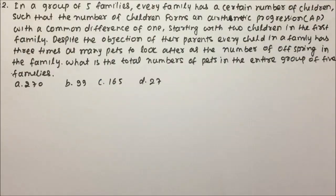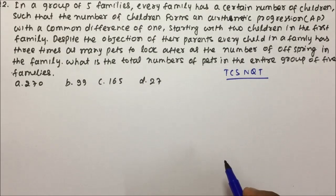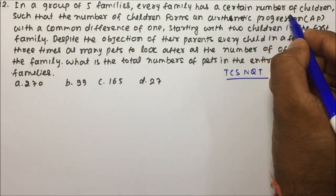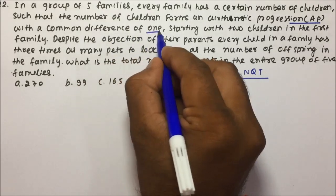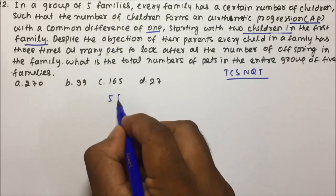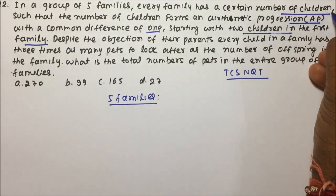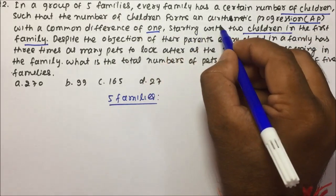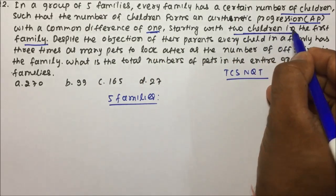Moving to question number 2 — a very good question that has been asked in TCS NQT previous year. In a group of 5 families, every family has a certain number of children such that the number of children forms an arithmetic progression with a common difference of 1, starting with 2 children in the first family.